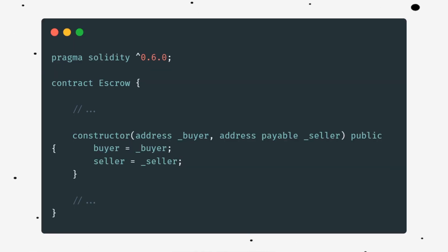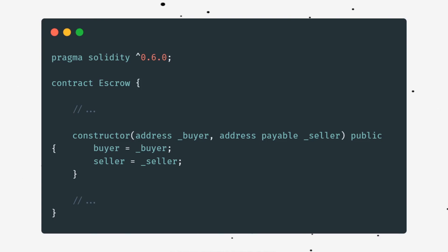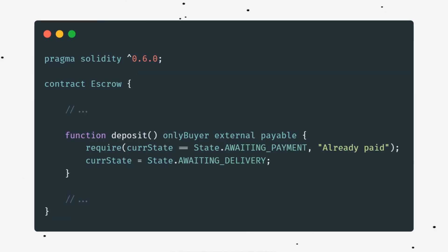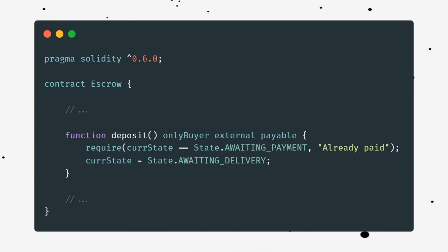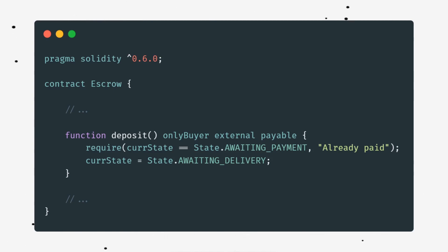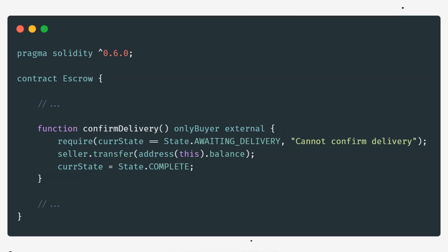Next, we'll create a modifier to ensure only the buyer can call certain methods. In our constructor, we'll initialize the buyer and seller addresses. Then we'll create a deposit method — it's payable so it receives Ether. Only the buyer can call it, and it can only be called when there are no funds already in the escrow. Once called, you can set the current state to awaiting delivery.